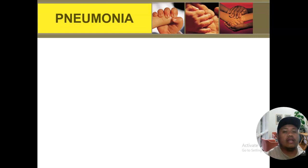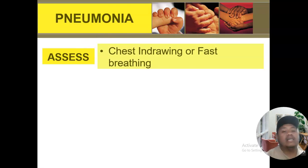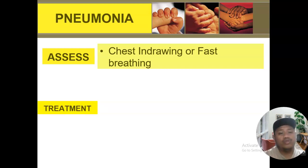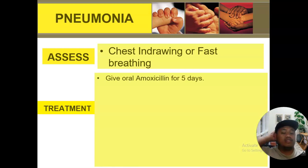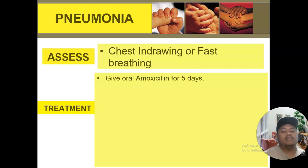For the pneumonia classification: if there is no danger sign and no stridor, but chest indrawing or fast breathing is present — either one or both — classify the condition as pneumonia. If stridor is present with chest indrawing and fast breathing, that is severe pneumonia. The drug of choice for the pneumonia classification is amoxicillin. For severe pneumonia, it is the combination drug ampicillin plus gentamicin (or penicillin plus gentamicin if ampicillin is unavailable). Also give rapid inhaled bronchodilator for five days.